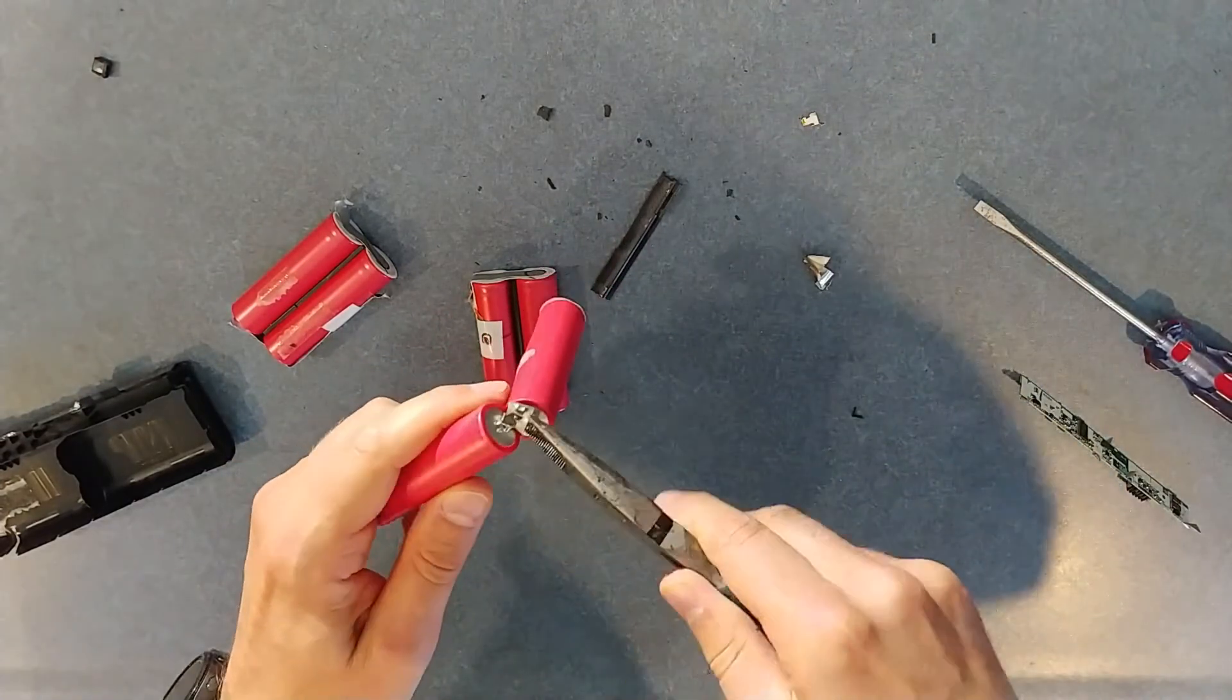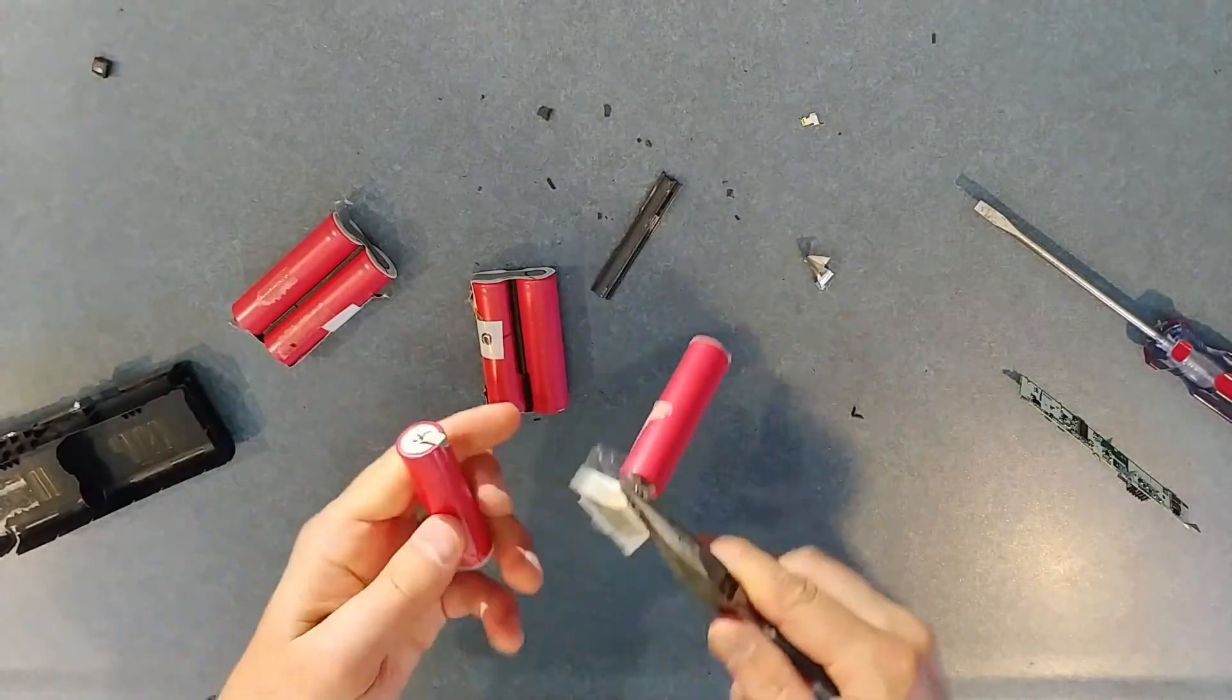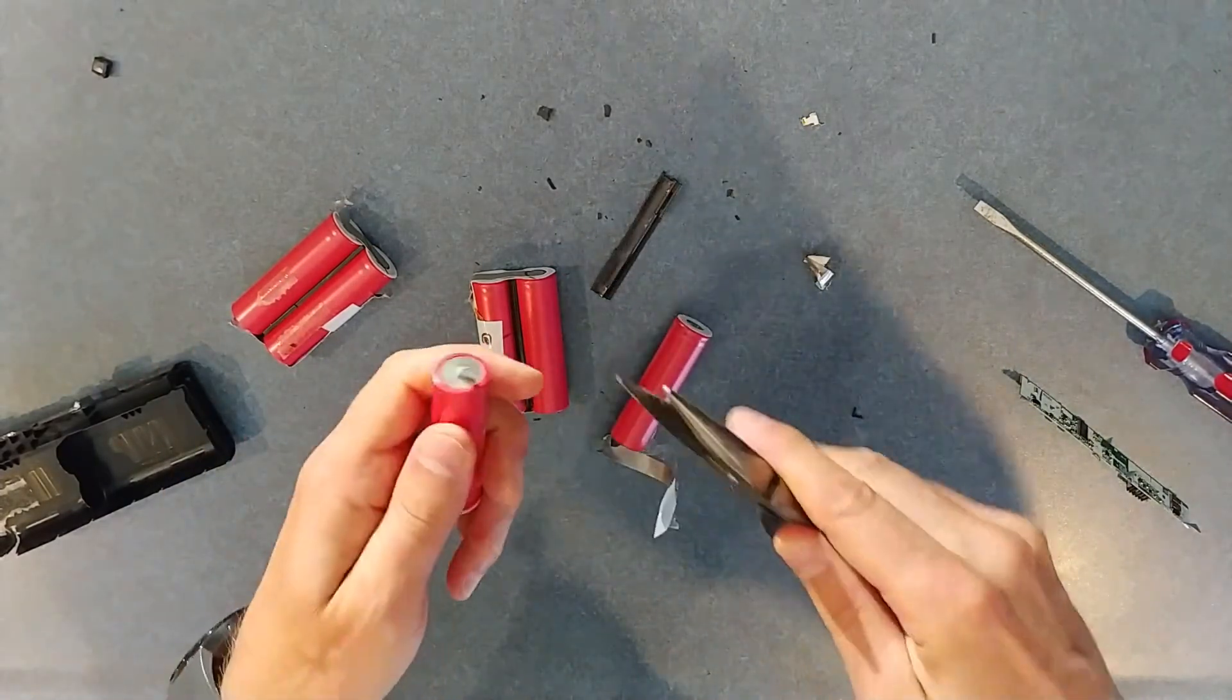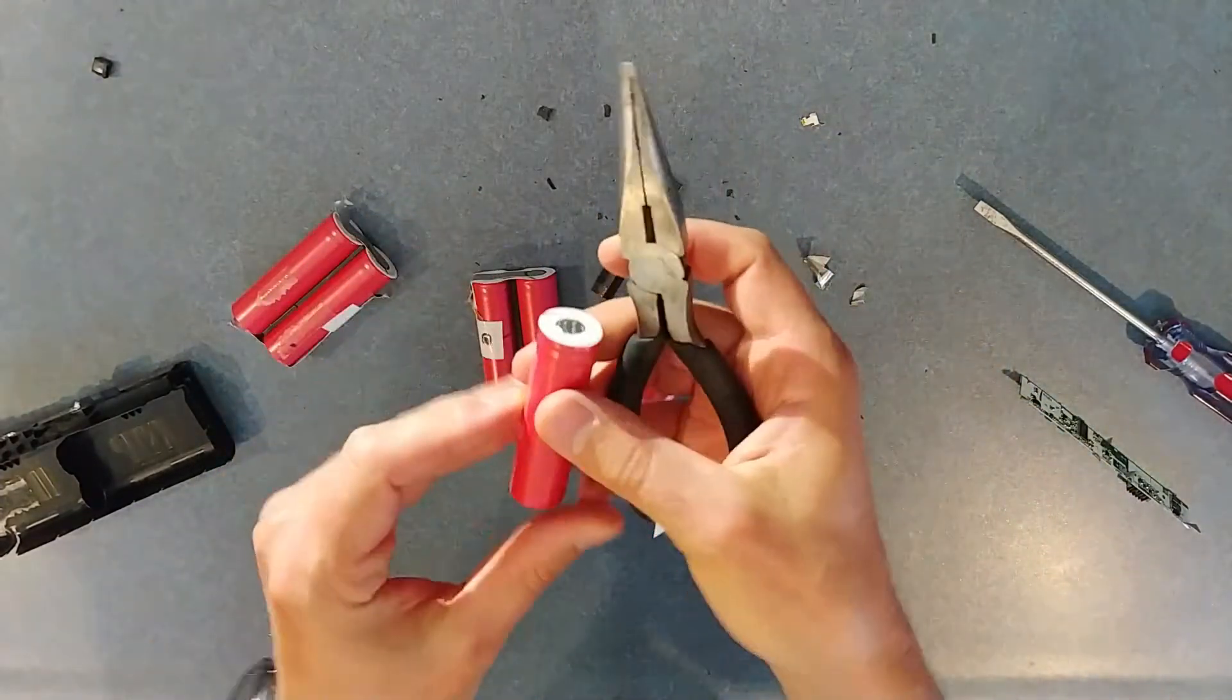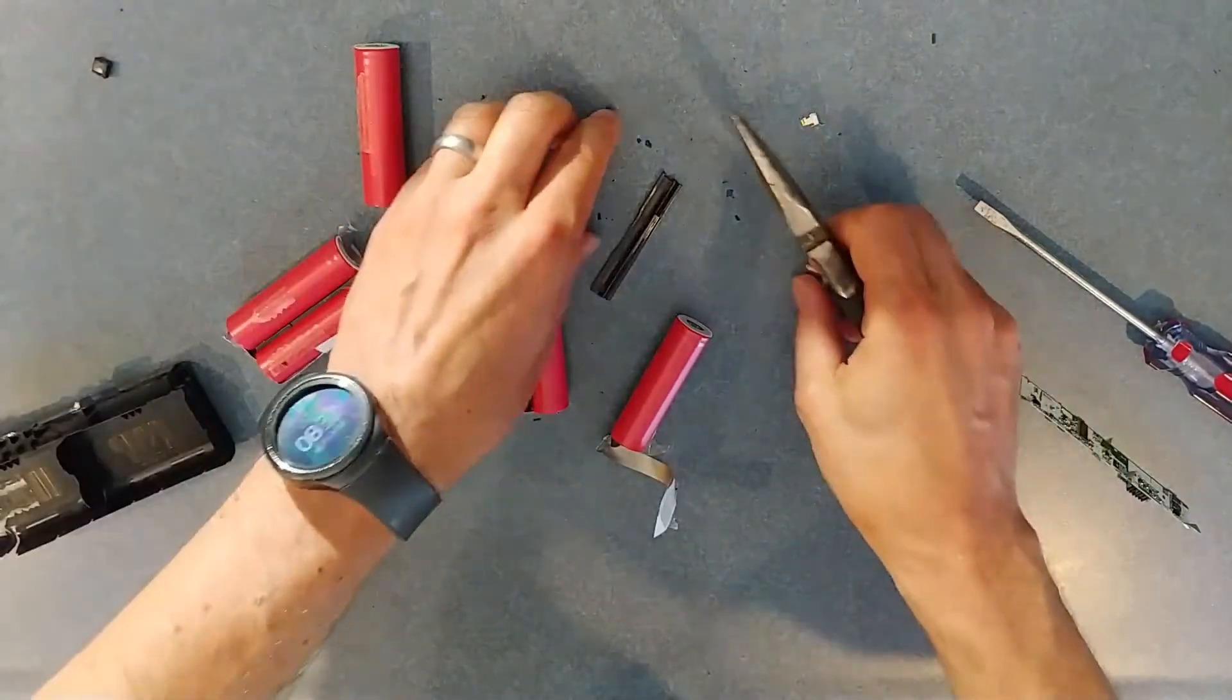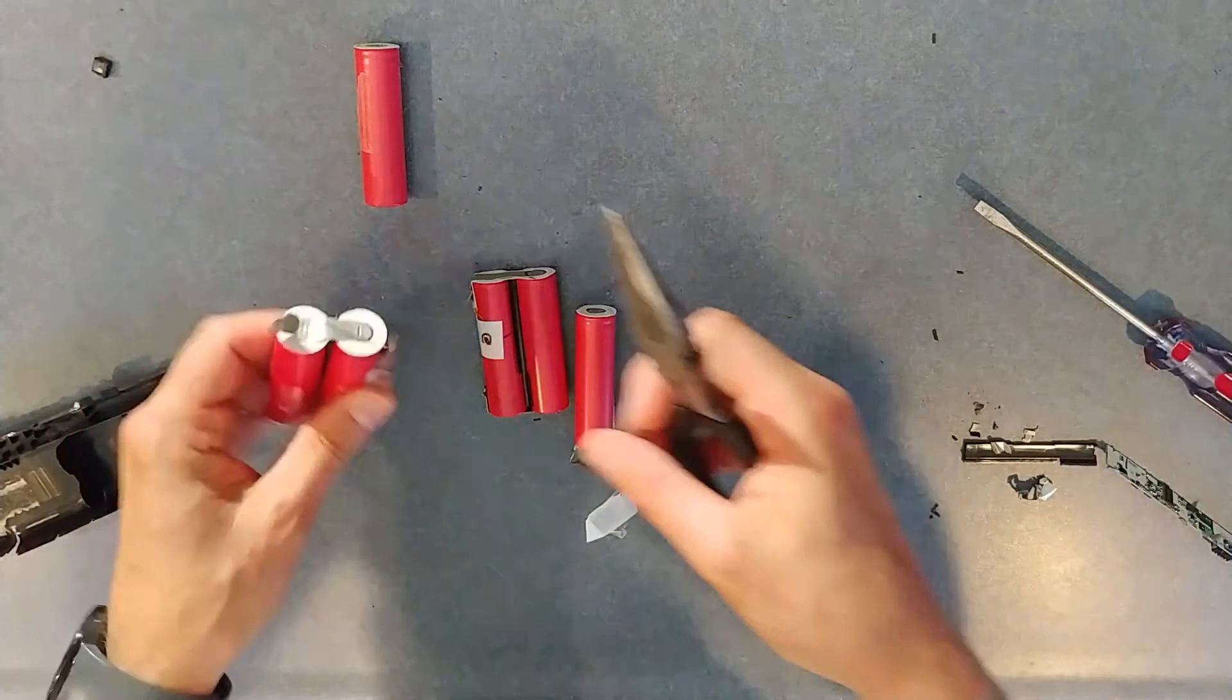That one's not coming off quite so clean. So bend that up and try to roll it again. There we go. So there's one individual cell. And let me just finish taking the rest of these things off.